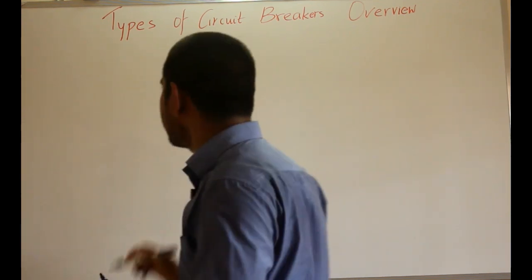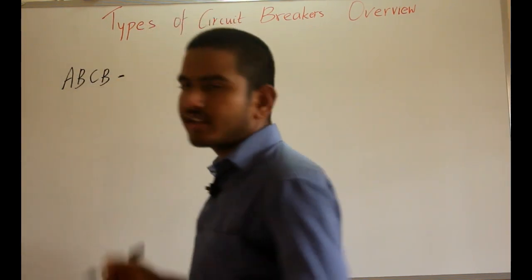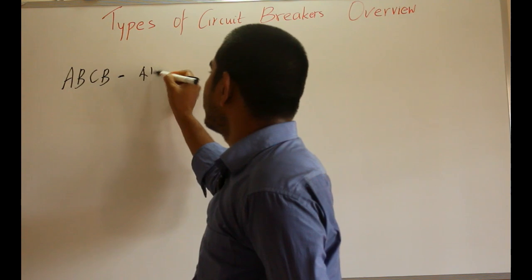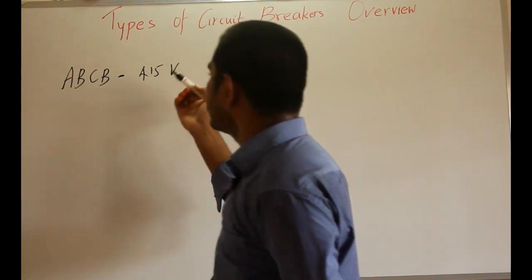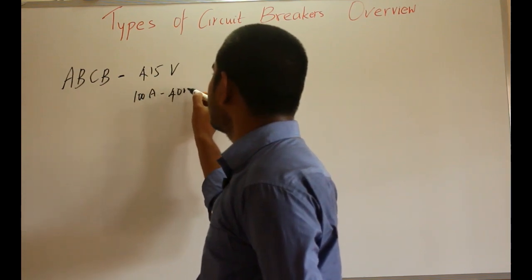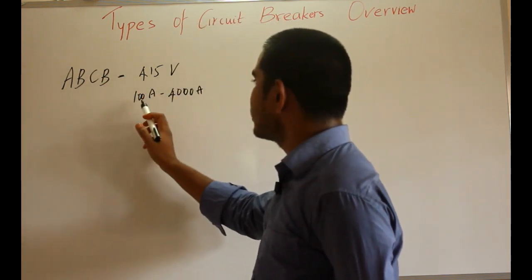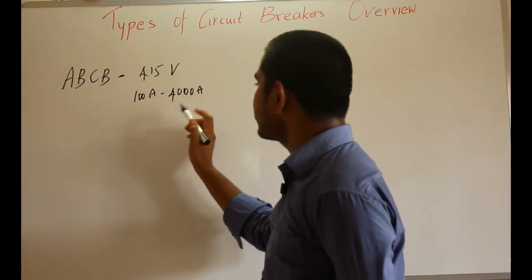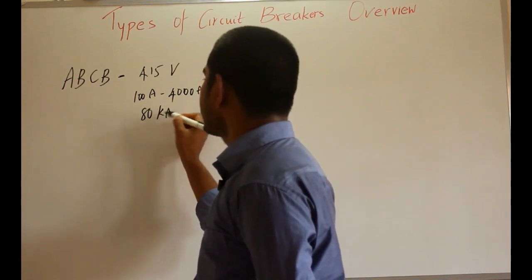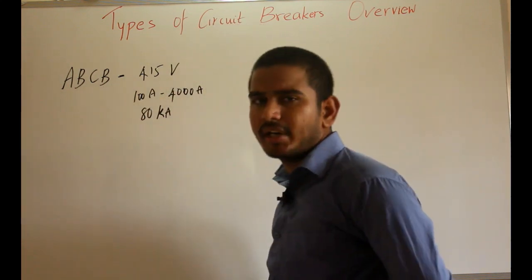The first breaker is the air break circuit breaker. Air break circuit breakers are employed for voltages up to 415 volts and current ranging from 100 amperes to 4000 amperes. The breaking capacity recorded is 80 kilo amperes. The air here is at normal temperature and pressure — air blast is different from normal air.